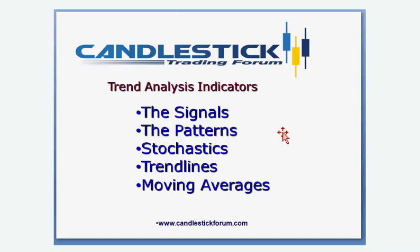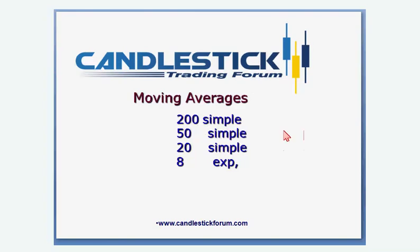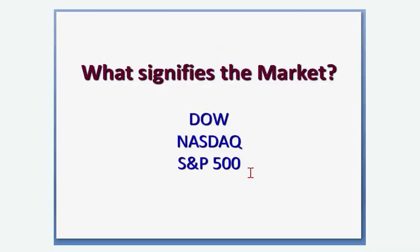As with all our analysis, the signals are the top priority, then the patterns, where are the stochastics, and then what are the support and resistance levels, trend lines, and moving averages. As you can always see in our charts, the moving averages we use are the 200, the 50, and the 20 simple day moving averages, and then the T-line, our exponential moving average. What signifies the market? The Dow, the NASDAQ, the S&P.